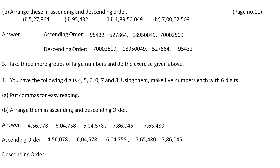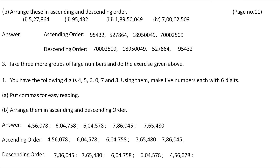Now let's write these numbers in descending order. First we write the greatest number: 7,86,045. Then comes 7,65,480. Then comes 6,47,850. Then comes 6,47,058. And last, the smallest number: 4,56,078.